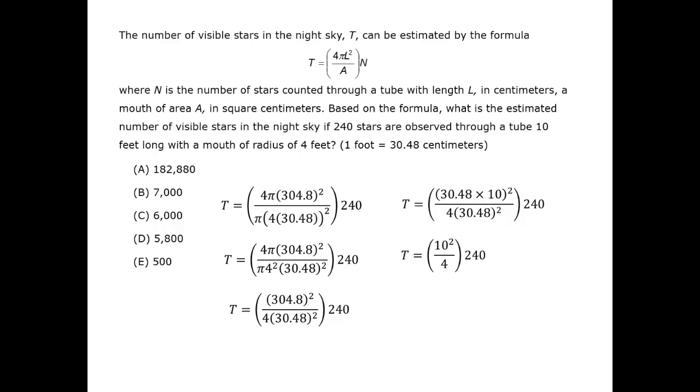The factor of 4 can be canceled between the 4 and the 240, and we're left with 100 times 60, or 6,000. The correct answer is C.